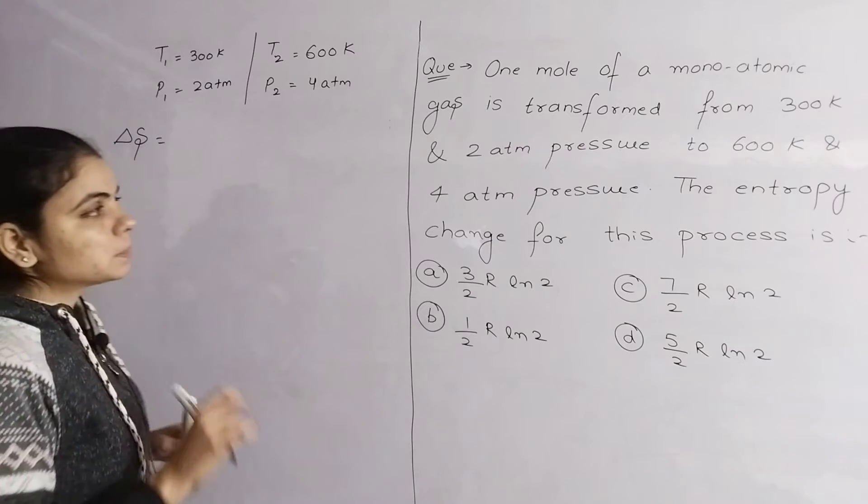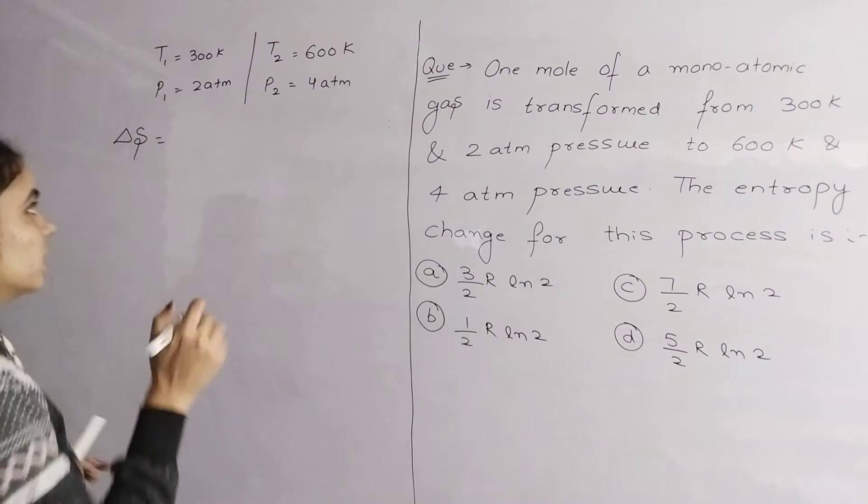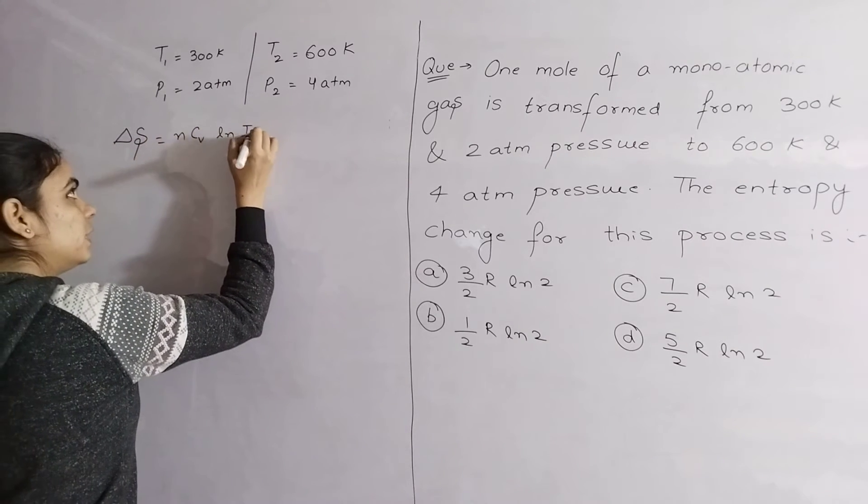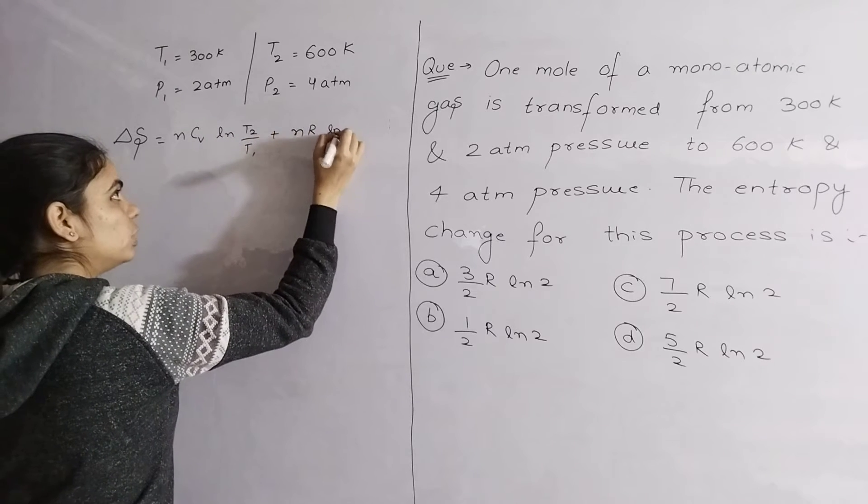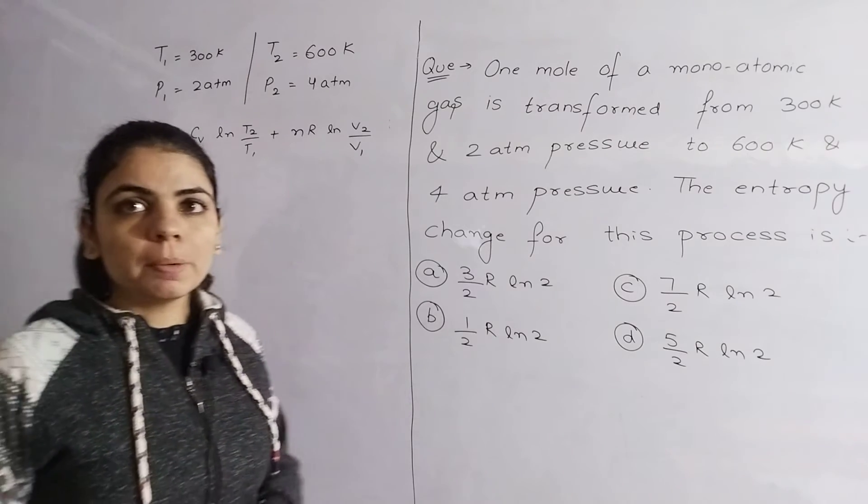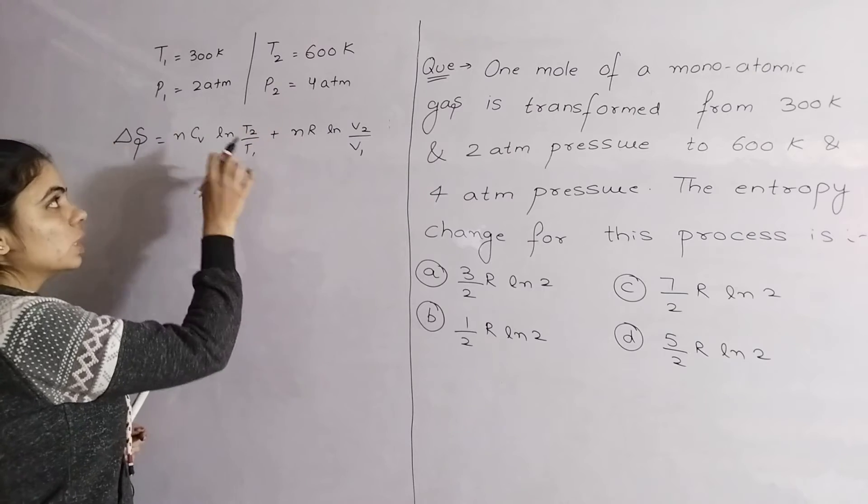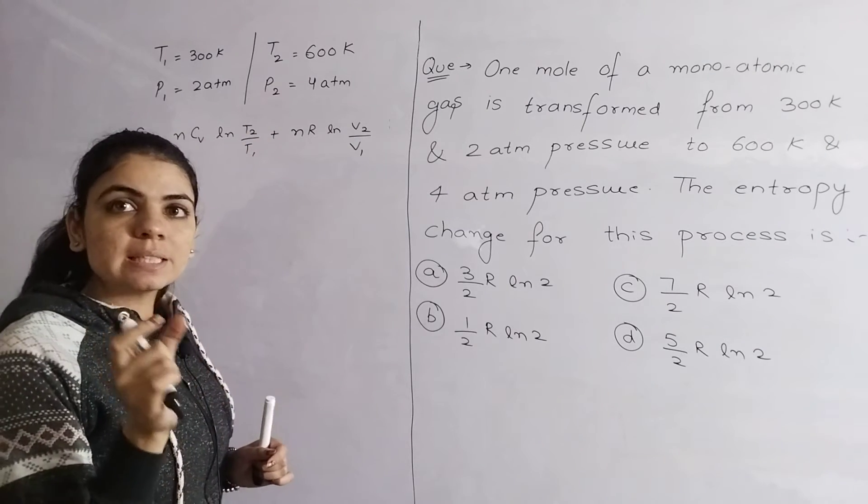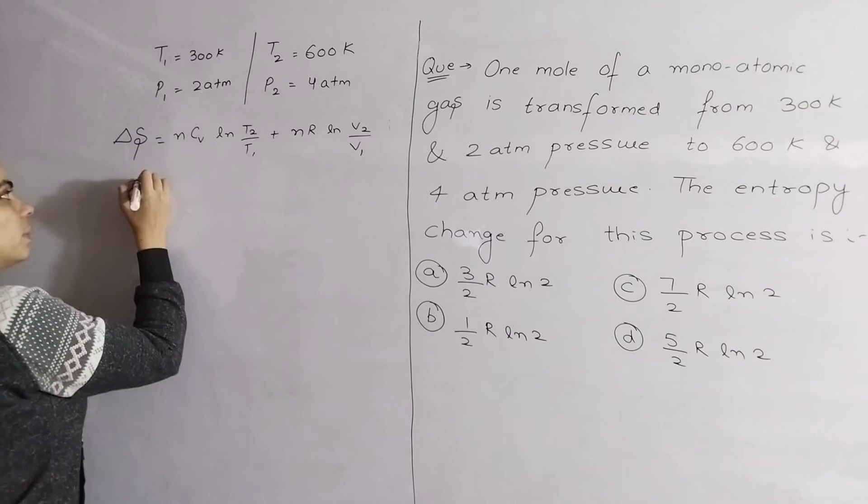First of all, what do we need to do? We need to see what formula to use. The formula we use is NCV ln(T2/T1) plus NR ln(V2/V1). The formula we have, but the thing is that volume change we don't know. So first of all, we need to express this in terms of temperature and pressure.